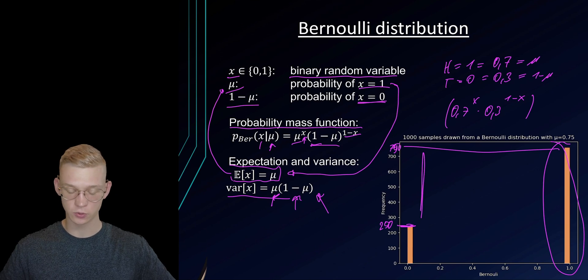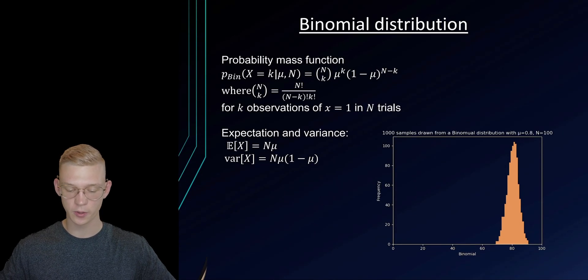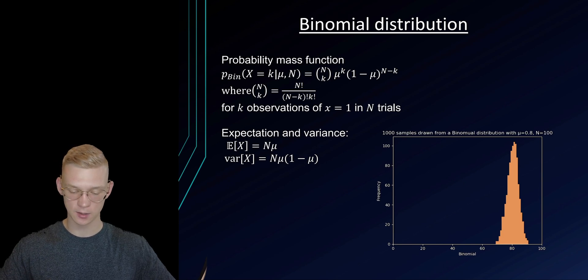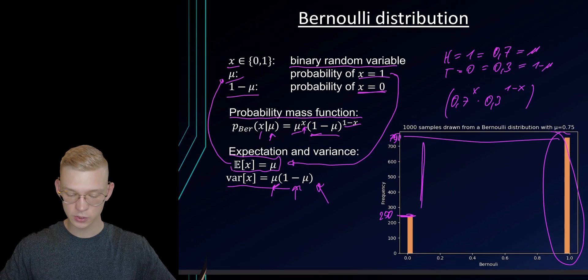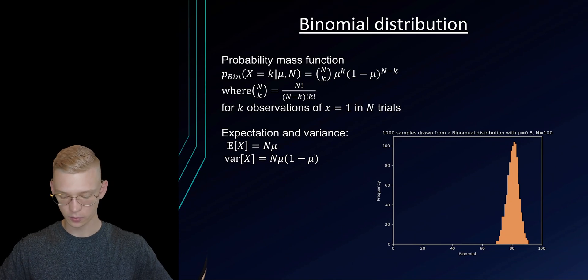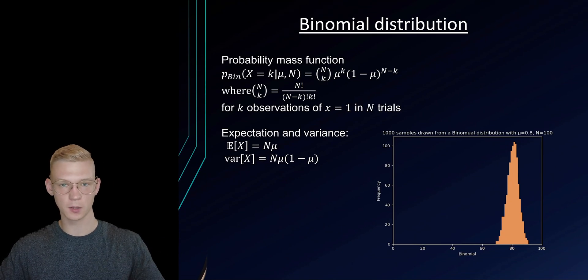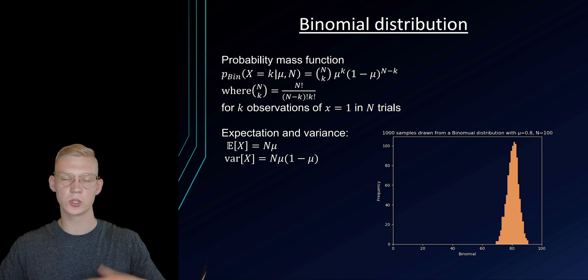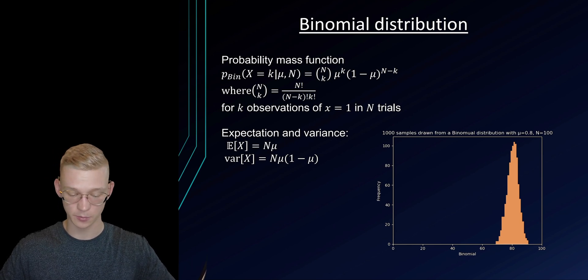So this is a very simple distribution and now we will go to the binomial distribution and that is basically just the same as the Bernoulli distribution, just a sum overall. We perform this experiment multiple times and we have multiple results and we just sum up over all possible possibilities.